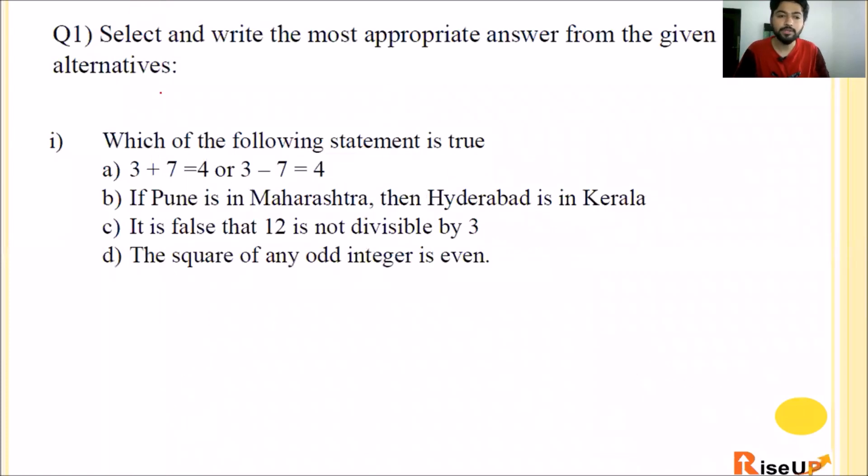Let's start with the first question. Which of the following statement is true? See option C. It is false that 12 is not divisible by 3. This statement is false. Okay, so negation of false is true. So which of the following statement is true? C is true. The rest are false.